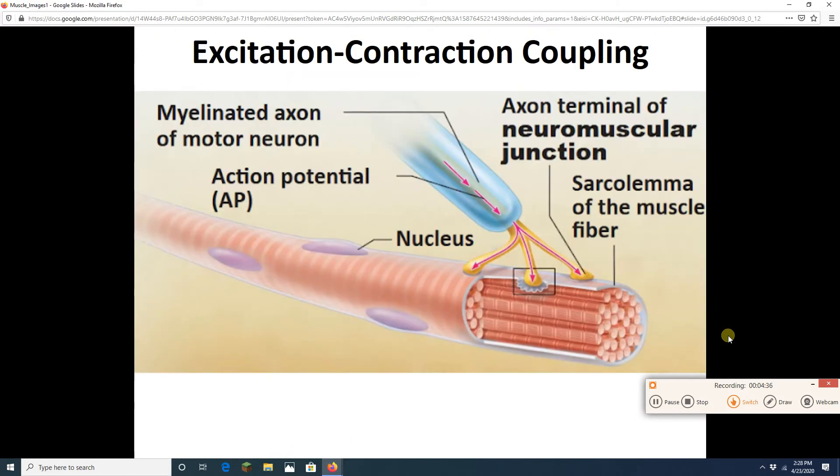Now, what we got to do is figure out how an action potential coming down a motor neuron is going to stimulate the muscle cell in such a way that the muscle cell contracts. How does a neuron eventually cause the myosin to grab onto the actin and pull it inward, making those sarcomeres get shorter? Now, this process where we're putting together what's going on with the neuron and what's going on with the muscle fiber is called excitation-contraction coupling.